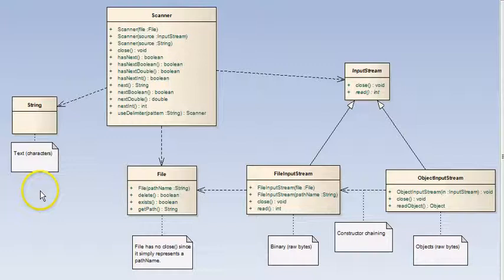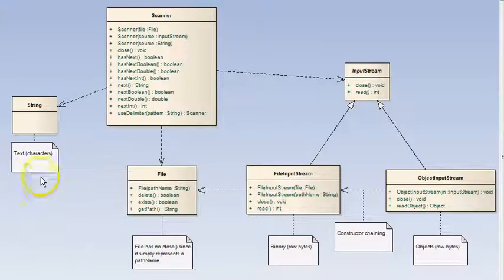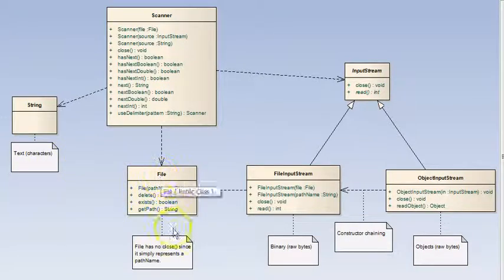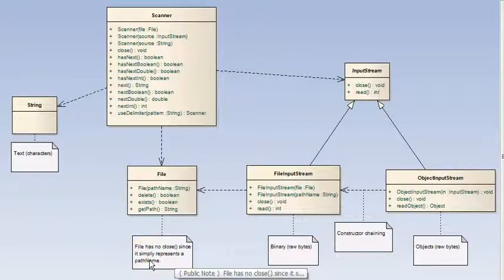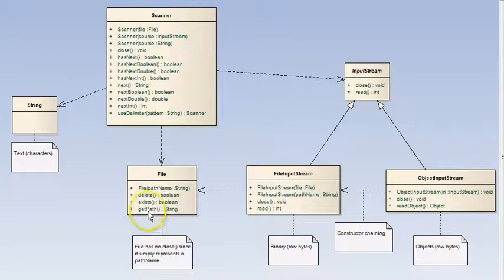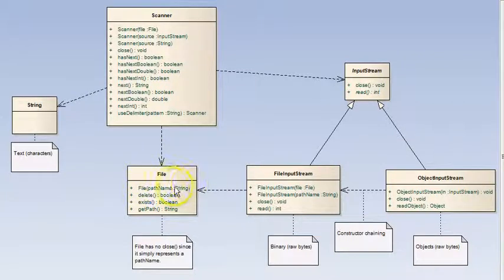Look at the notes here. A string is text — it's definitely set up for text. A file here, the class File, represents a path name, the location of the file. It does have some functionality to delete the file, to get the path, or to see if the file exists, but it mainly is a path name.